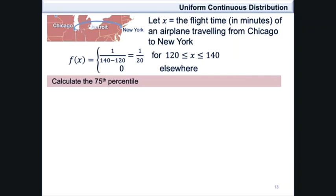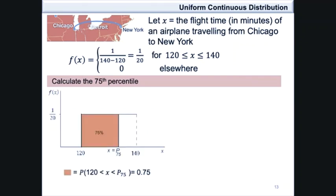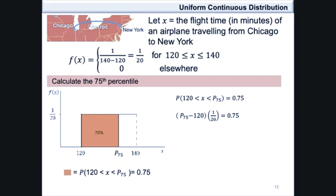Calculate the 75th percentile. As illustrated on the graph, the 75th percentile is the value of x for which the area to the left of x is 0.75, or 75%. The shaded area is equivalent to the probability that x is between 120 and p75, and this is equal to 0.75. The shaded area under the probability density curve is a rectangle, so we use the area formula: the change in x — that is, p75 minus 120 — multiplied by the height of 1 over 20, equals 0.75.